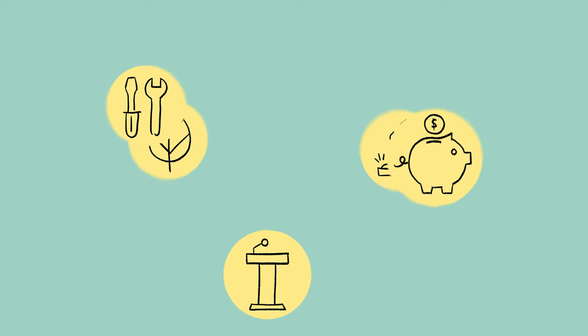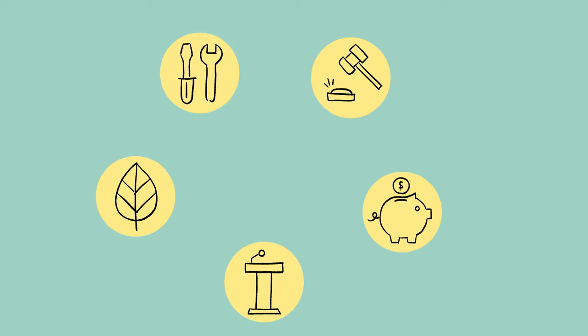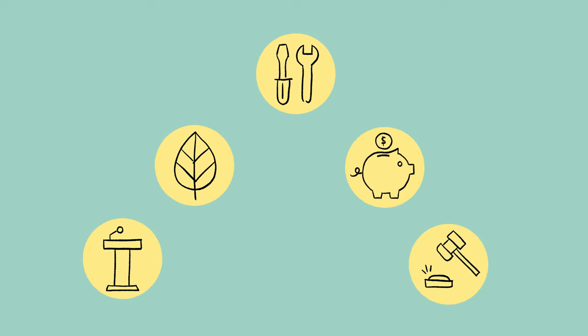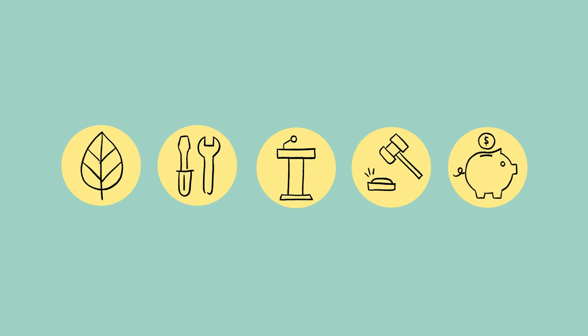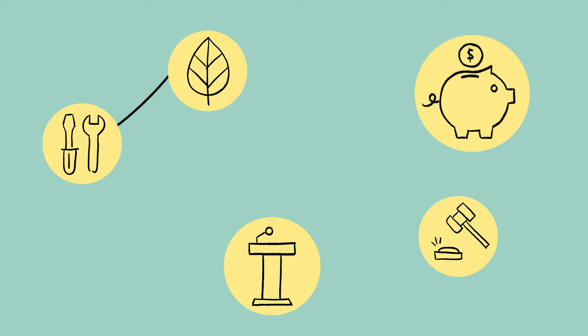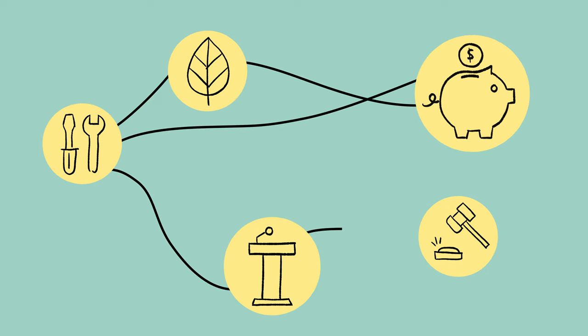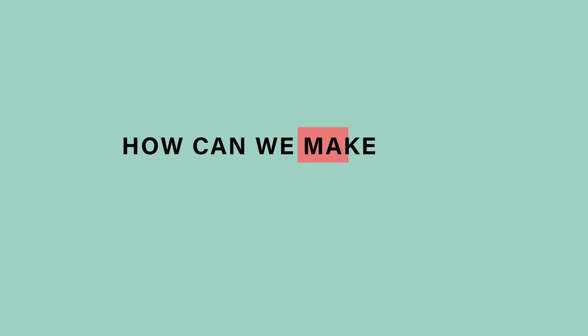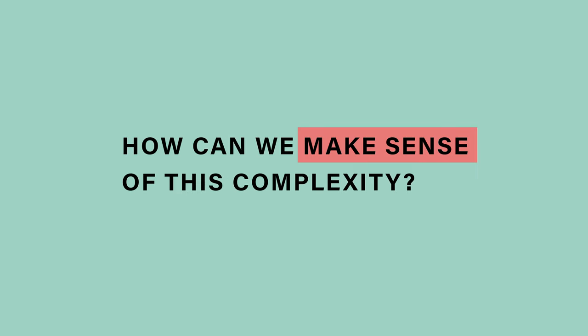This means we cannot talk about the optimal solution. Such design problems are challenging because various aspects and components are interconnected and interdependent. How can we make sense of this complexity?